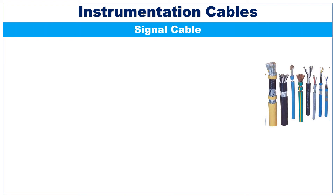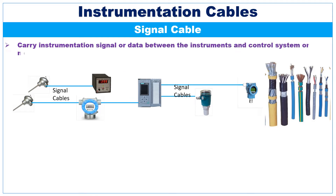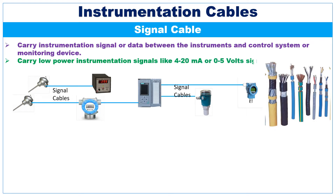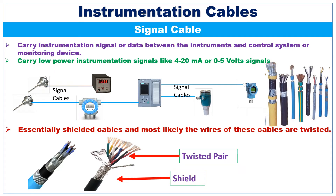Signal cables carry instrumentation signal or data between the instruments and control system or monitoring devices. These cables carry low power instrumentation signals like 4 to 20 mA or 0 to 5 V signals.